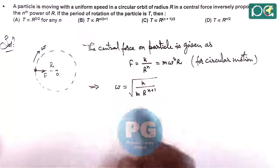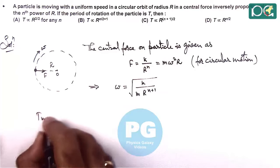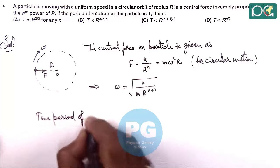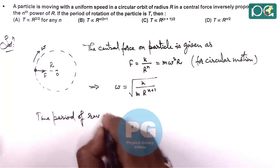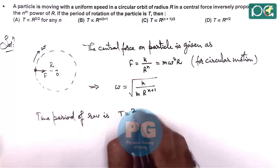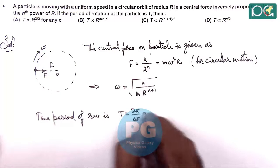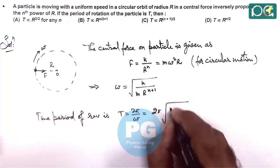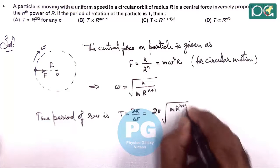So if we have got the angular speed, then we can get the time period of revolution. T we can write as 2 pi by omega, so this is 2 pi root of m r to power n plus 1 by k.